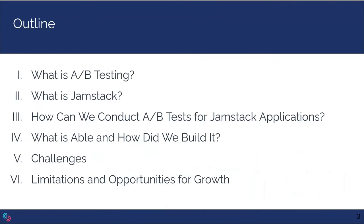We'll begin by talking about what A-B tests are, why they're important, and how they're traditionally conducted. Then we'll cover JAMstack architecture and its advantages over a traditional client-server model. Next, we'll discuss the specific problems presented by A-B testing JAMstack applications and available solutions. Then we'll present ABLE, explain its features and development challenges, and finally talk about features that could be added in the future.